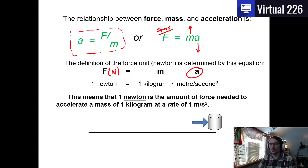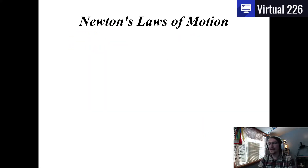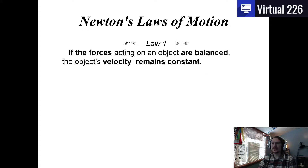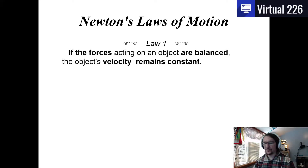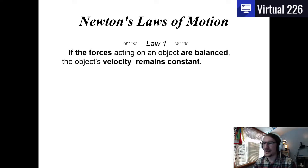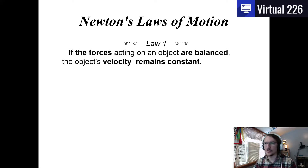That brings us to Newton's First Law of Motion. The common statement — 'an object at rest stays at rest, an object in motion stays in motion' — is actually a poor way of saying it. A better way is: if the forces acting on an object are balanced, the object's velocity remains constant — its speed and direction stay the same.